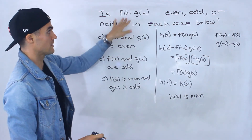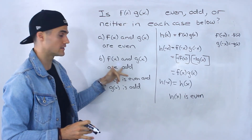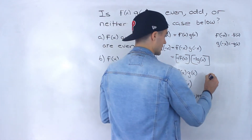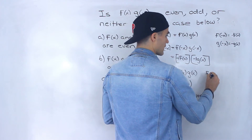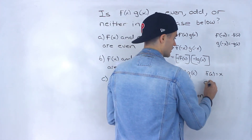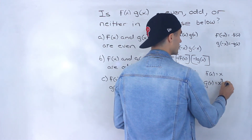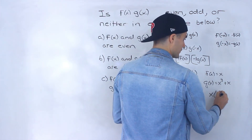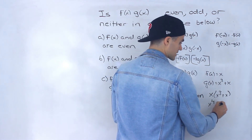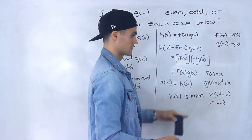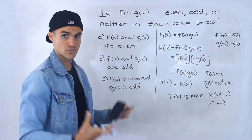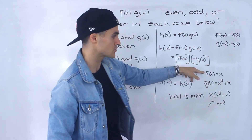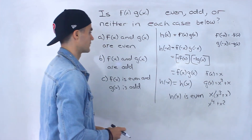So it's actually even in both of these cases. If f(x) and g(x) are both even, multiplying them gives an even function. If they're both odd, multiplying them still gives an even function. You can test this: take f(x) = x and g(x) = x³ + x, both odd functions. When you multiply them and expand, you get x⁴ + x², and notice all the exponents are even. That always works for any odd functions you choose.